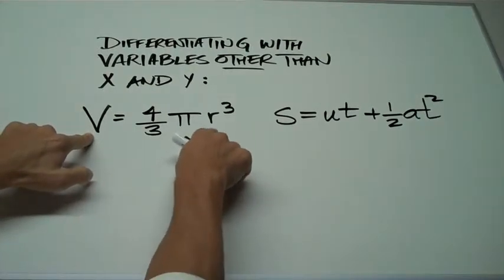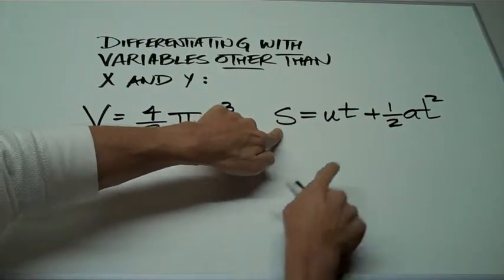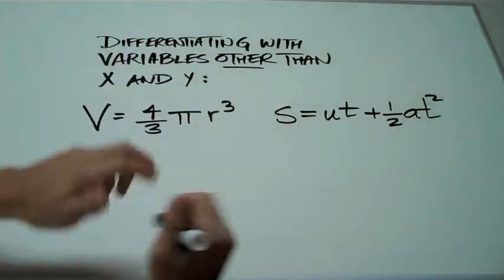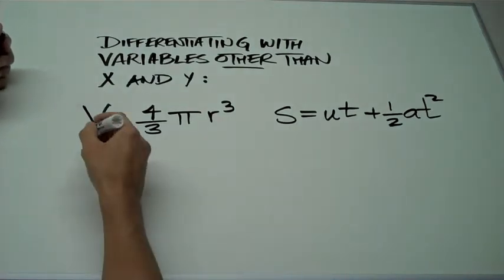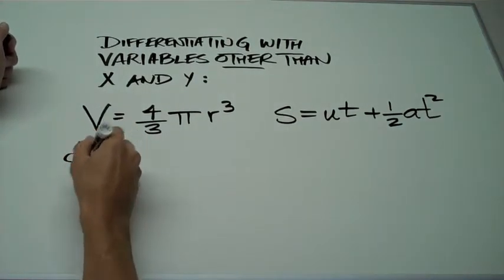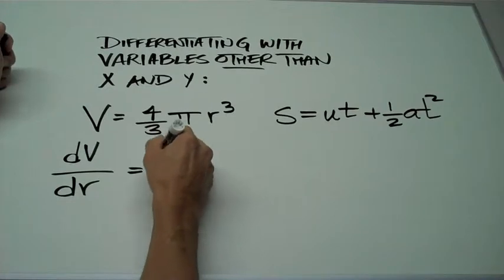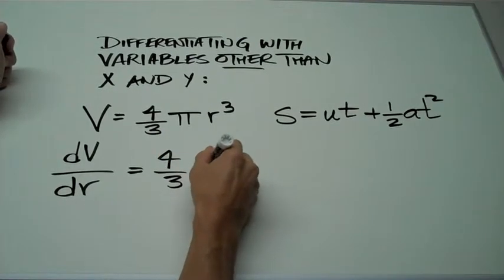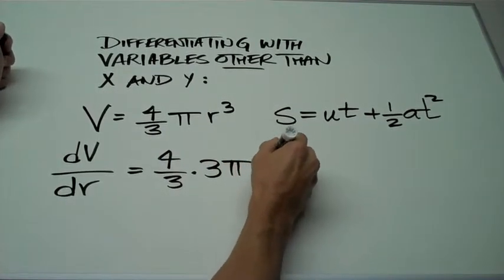Here we have volume with respect to radius or position with respect to time, and we can still take the derivative of that. In this case, dV/dr is equal to 4 over 3 times 3 times π times r squared.